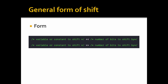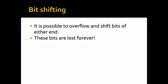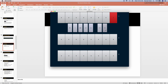The general form of the shift looks like this: the variable, the constant you wish to shift, and the number of bits to shift by. The left shift and right shift have the exact same syntax other than what they actually end up doing. Note that it's possible to overflow and shift bits off either end — if you do this, those bits are lost forever. We can see this in the binary grid: if we shift a number off the end and shift it back, there is nothing to shift because the bit has been completely lost.